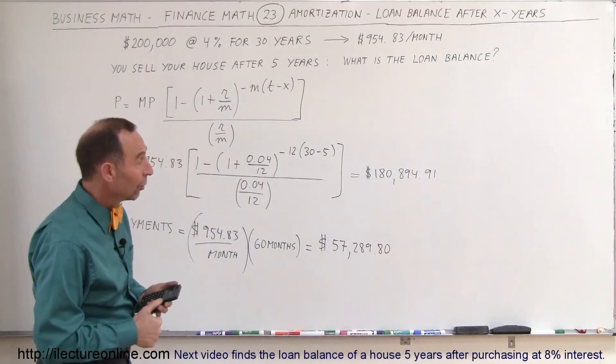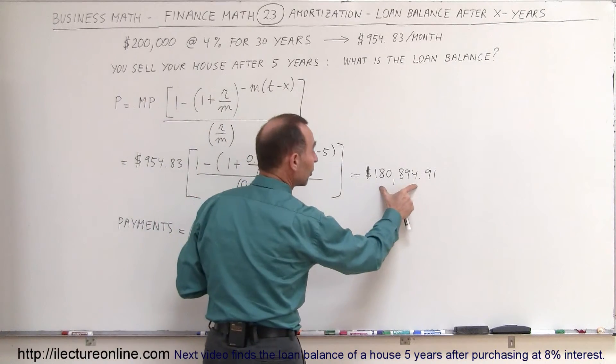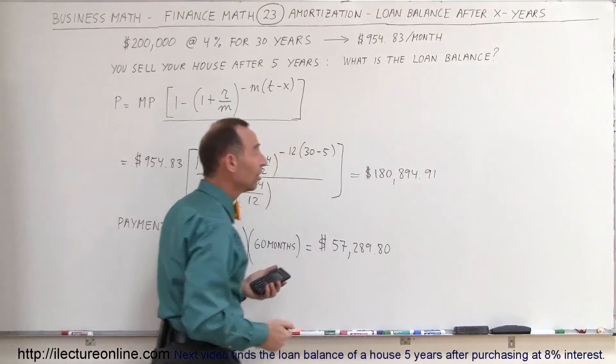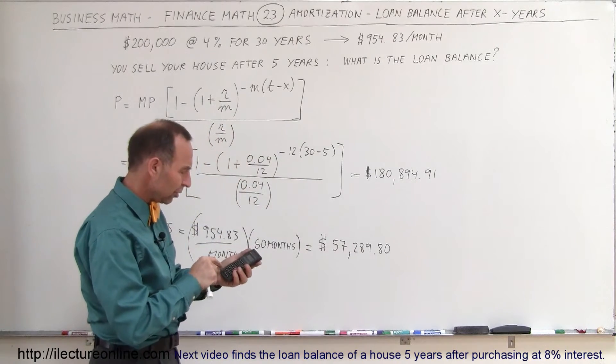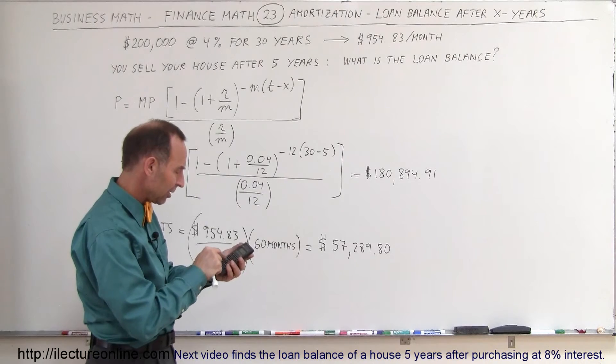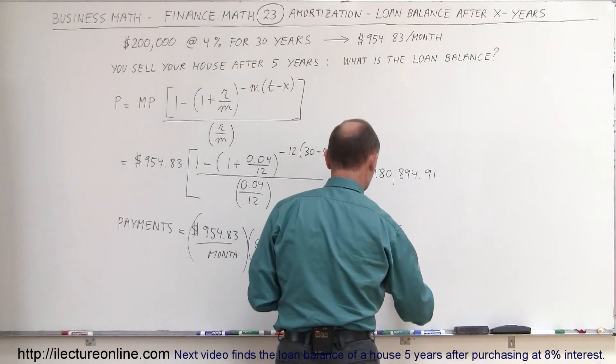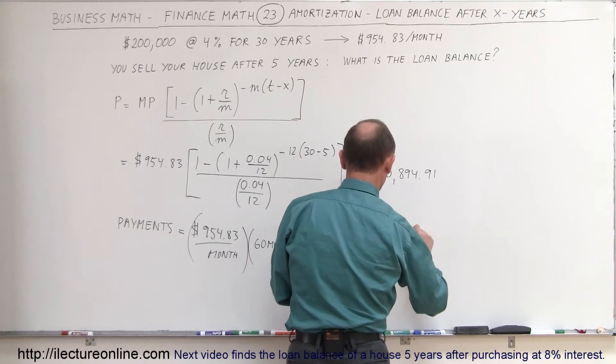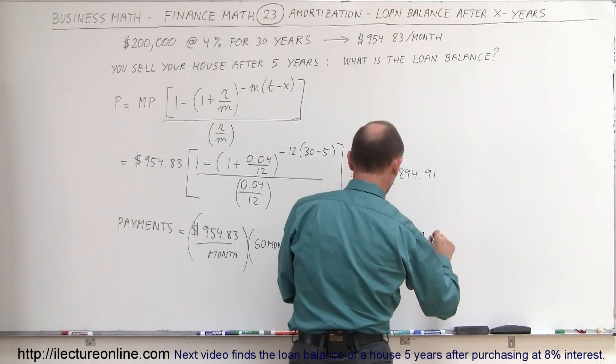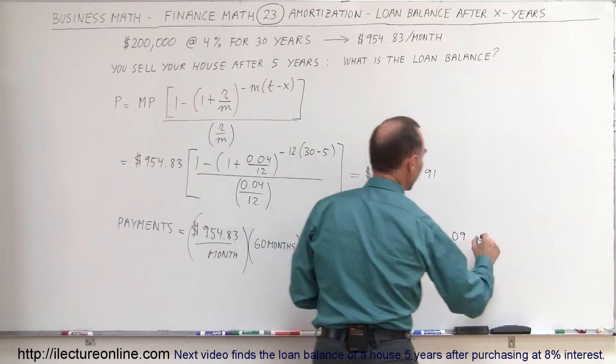Well, how much of that went to paying off the house, or I should say paying off the loan? So it would be $200,000 minus this. So you can see if you take $200,000 and subtract from that $180,894.91, you can say that of this amount, a total of $19,105.09 went to principal.